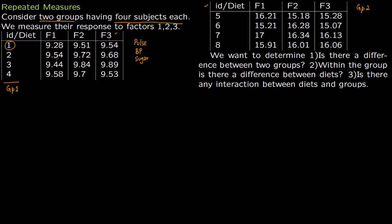Similarly, subject 2 has responses to three different factors. In this diet example, F1 is diet 1, F2 is diet 2, F3 is diet 3. Subject 2 responds 9.54 to diet 1, 9.72 to diet 2, and 9.68 to diet 3, and so on.